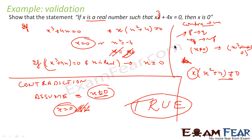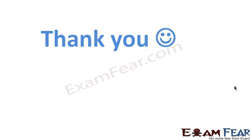So if you take any real number other than 0, the equation x³ + 4x is never equal to 0. Thus by contrapositive we have also proved that the statement is correct.